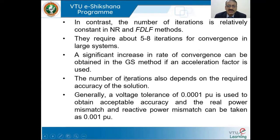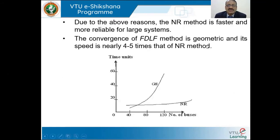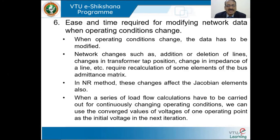A significant increase in rate of convergence can be obtained in the Gauss-Seidel method if an acceleration factor is used. The number of iterations also depends on the required accuracy of the solution. Generally, a voltage tolerance of 0.0001 per unit is used to obtain acceptable accuracy, and the real power mismatch and reactive power mismatch can be taken as 0.001 per unit. Due to these reasons, the NR method is faster and more reliable for large systems. The convergence of the FDLF method is geometric, and its speed is nearly 4 to 5 times that of the NR method.